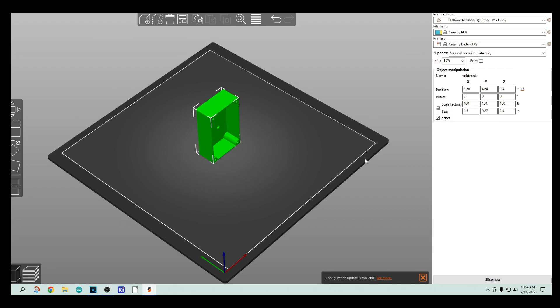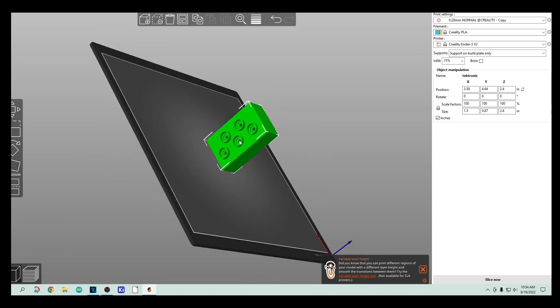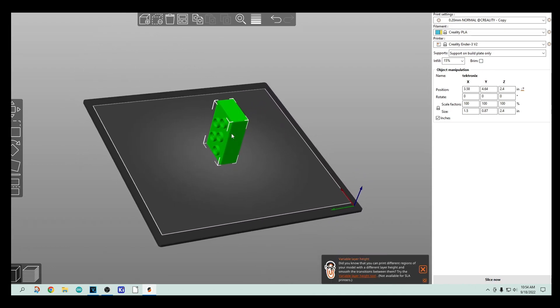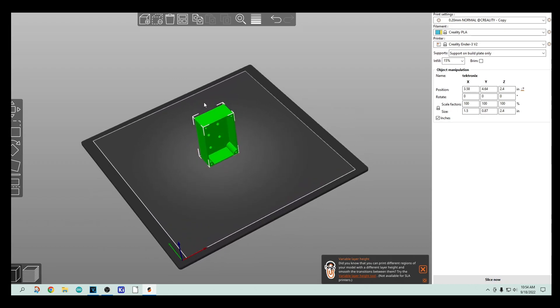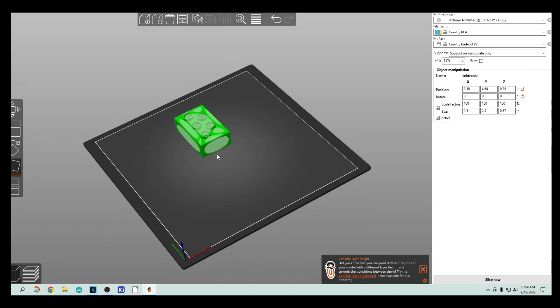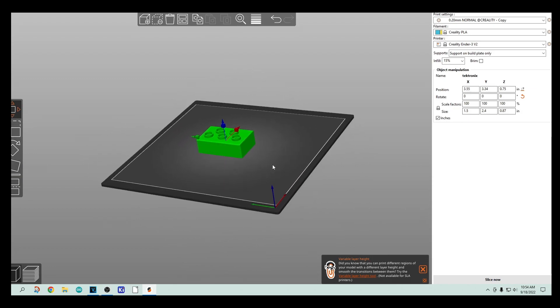Alright, so this is the slicer I use. This is a Prusa slicer. So I've opened up the part into Prusa slicer, and you can see here that it's not in a very good orientation for printing. So I'm going to have to flip it down. So I can say I want to flip it down onto this face, and it automatically puts it onto that face. Then I can say, no, I want to move it over towards the center.